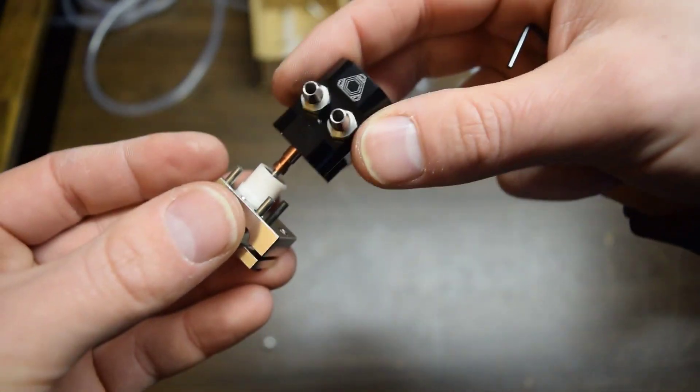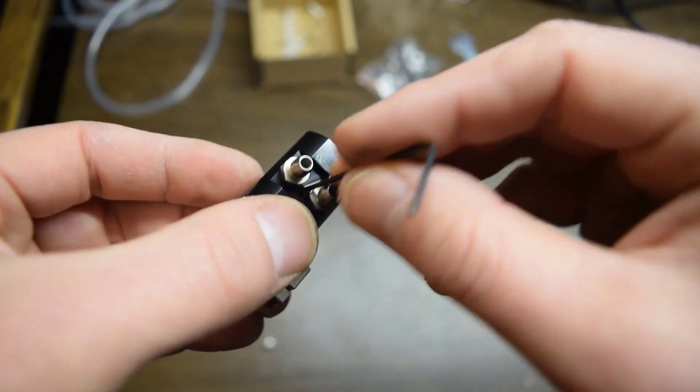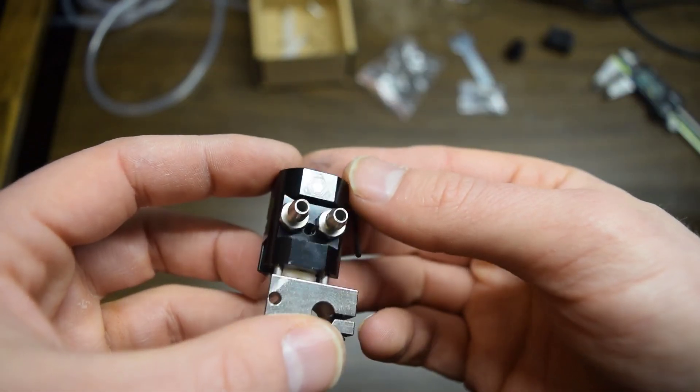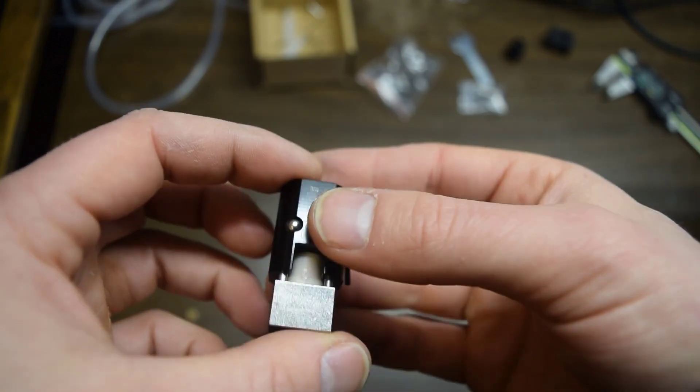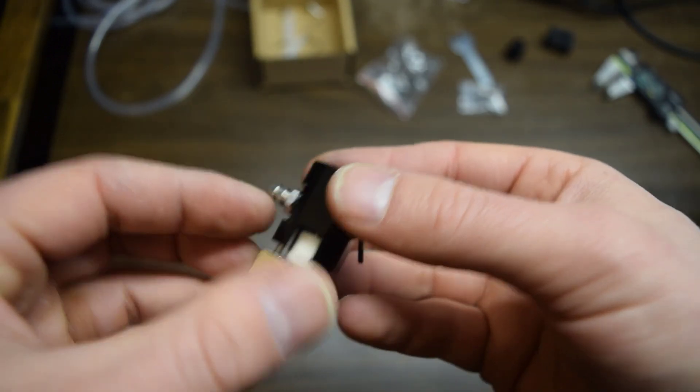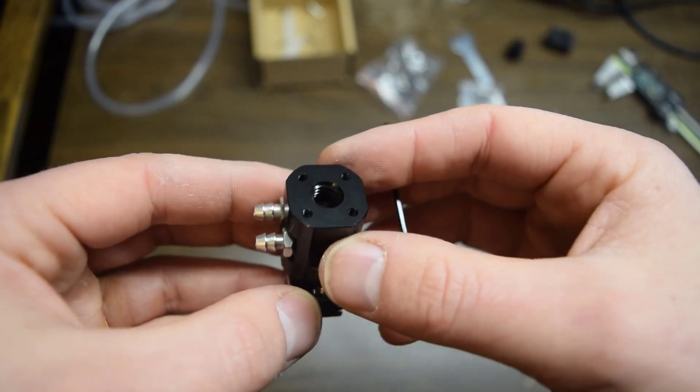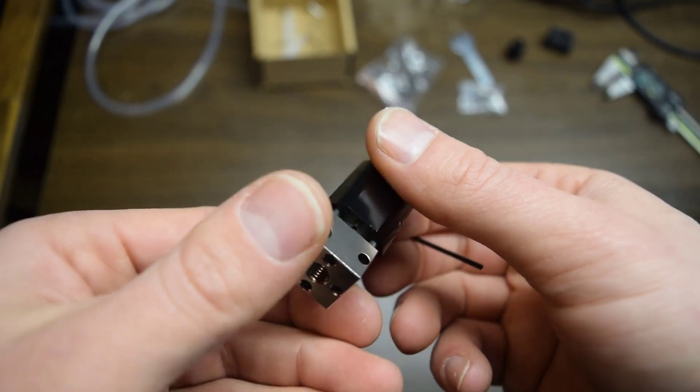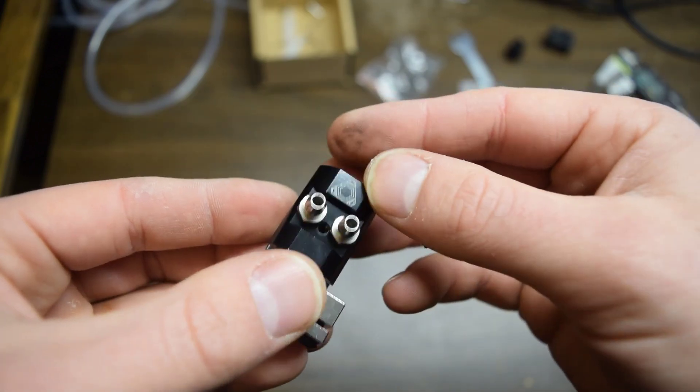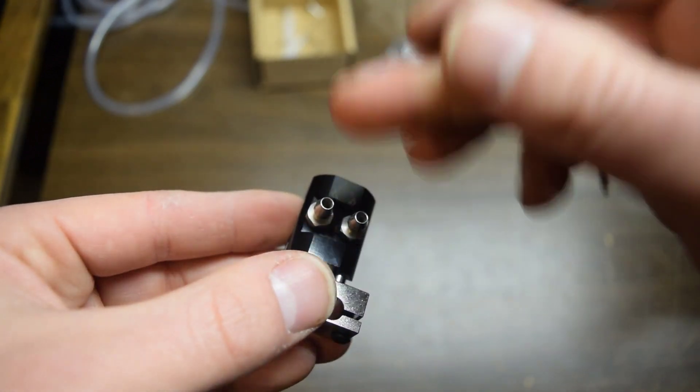Let's take a look at the construction of this water jacket here because I find this actually pretty interesting. This jacket here, this black part, this is all one piece of milled aluminum. I don't see any, this is all one piece.